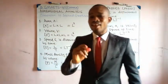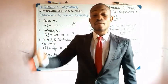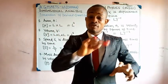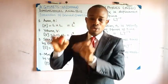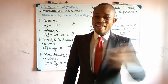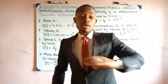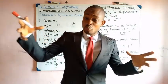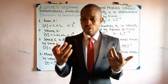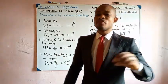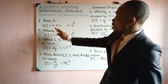Area is length times length — whatever shape you are dealing with. Even for a circle where area is πr², it is still length times length because π is a constant and r² is r times r. Therefore, the dimension of area is L raised to power 1 times L raised to power 1. By the multiplication law of indices, you pick one and add the powers: L¹ × L¹ = L².